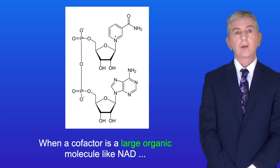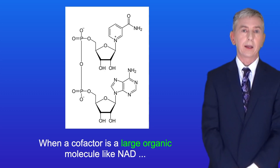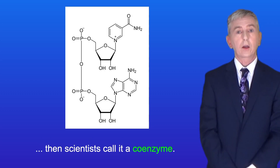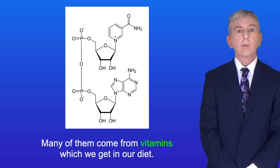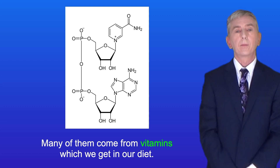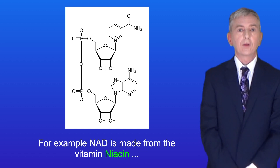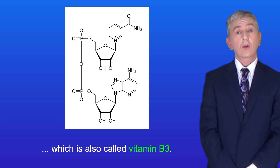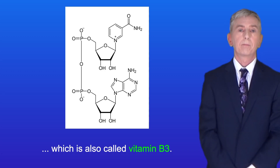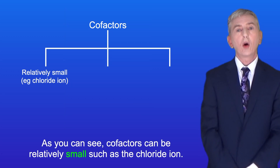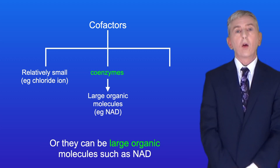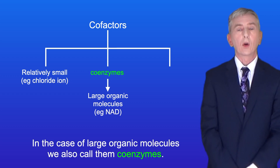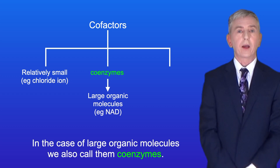Now when a cofactor is a large organic molecule like NAD, then scientists call it a coenzyme. There are lots of different coenzymes in biology, and many of them come from vitamins which we get in our diet. For example, NAD is made from the vitamin niacin, which is also called vitamin B3. So cofactors can be relatively small, such as the chloride ion, or they can be large organic molecules such as NAD, and in the case of large organic molecules we also call them coenzymes.